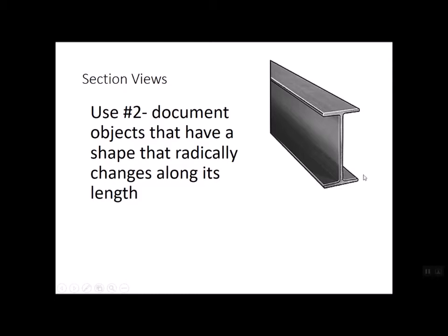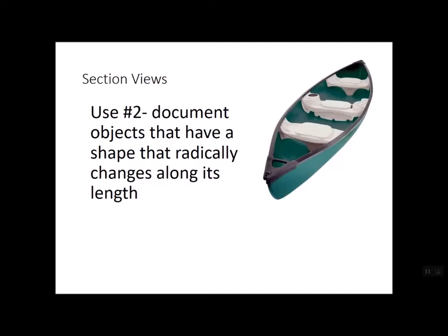Now, for example, this beam is a very simple shape. It looks like the letter I. And if you cut it back a foot, or two feet, or four inches, or five inches, it really wouldn't matter. Wherever you cut it, it has that same profile, that same eye shape. Well, not everything is like that. For example, look at our canoe here. If we were to slice through the canoe six inches back from the front point, it would have one profile. And if we went back a foot from there, a different profile. And a foot back, a different profile. So shapes that change radically along their length can be documented by using section views.